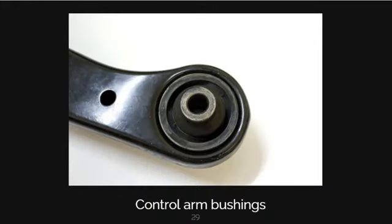Next are the control arm bushings, located at the other end of the control arms holding the ball joints. They use polyurethane bushings to allow the arms to go up and down. Like other rubber components, they tend to dry out and crack with time. When a control arm bushing is faulty, you should notice the inside sleeve sliding out of the bushing, and a low thump or metal noise will be heard when driving over potholes. Depending on the car model, control arm bushings may be expensive to replace.